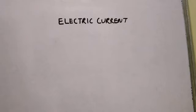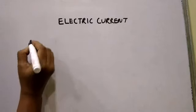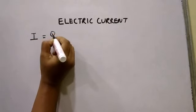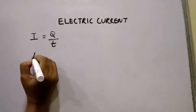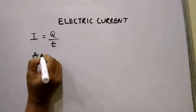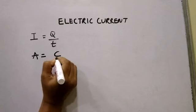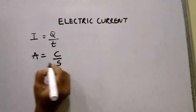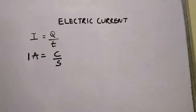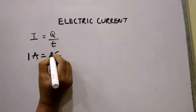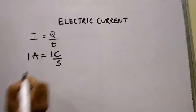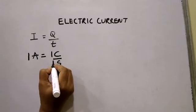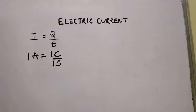Let us see how to define 1 ampere of current. Since I know that I equals Q upon T, the unit of current is ampere, the unit of charge is coulomb, and the unit of time is second. If I want to define 1 ampere of current, it means that 1 coulomb of charge has to flow through a cross-sectional area of a conductor in one second.